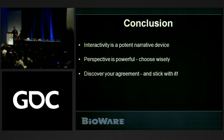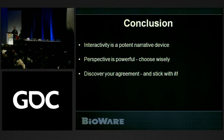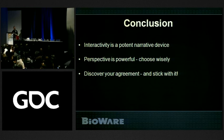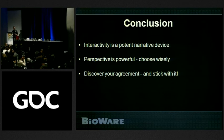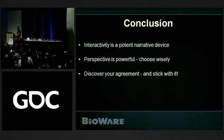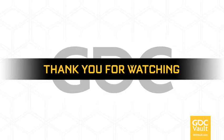In conclusion: interactivity is a very potent narrative device, and putting activity into cinematics is something we should all be looking at. The linear cinematic hasn't changed much, but we're forgetting these are game systems, and what they do really well is be interactive. Perspective is powerful — make sure when you start writing your game, you choose your perspective very wisely. And discover your agreement, and whenever you can, stick with it. Thank you very much.